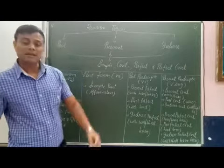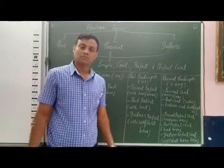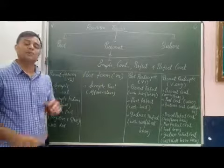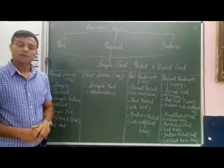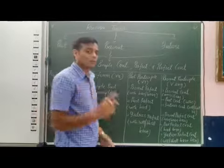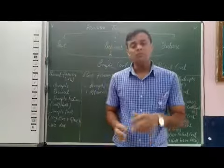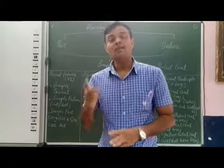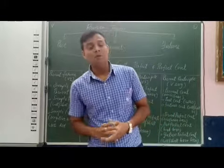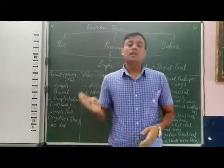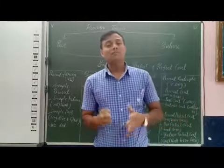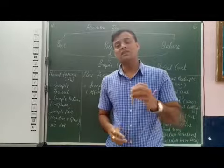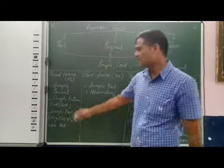Students, first we talk about present form. Present form means V1. V1 we use in three tenses: simple present, simple future, and simple past negative and interrogative sentences with 'do.' You can see here — present form of the verb, V1, we use in simple present and simple future.